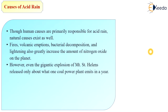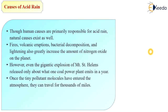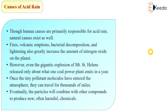Natural disasters like fires and volcanic eruptions emit a huge amount of sulfur dioxide and nitrogen dioxide into the atmosphere, comparable to man-made causes. Once tiny pollutant molecules have entered the atmosphere, they can travel for thousands of miles. Eventually the particles combine with other compounds to produce new, often harmful chemicals.